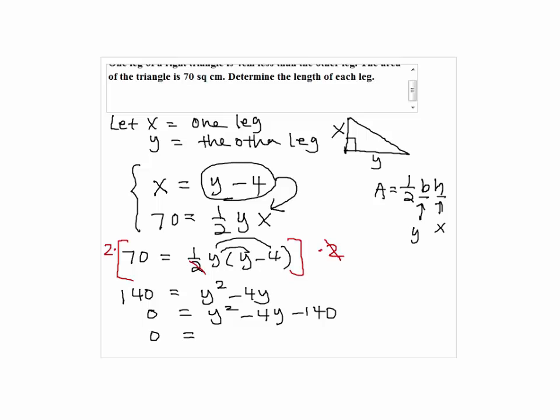By factoring the expression, we have y minus 14 times y plus 10 equals 0.